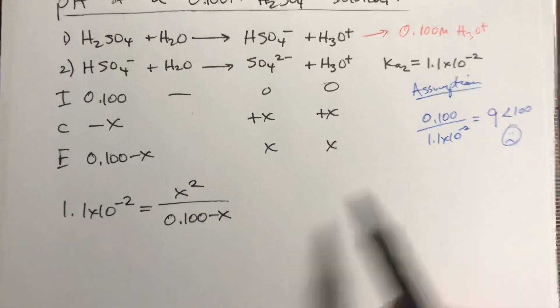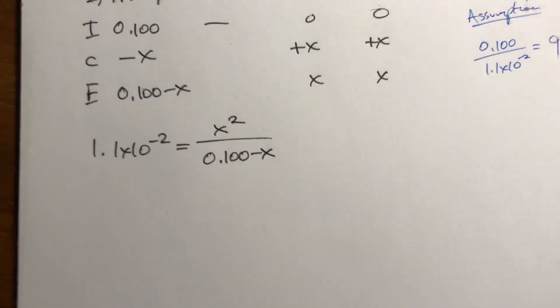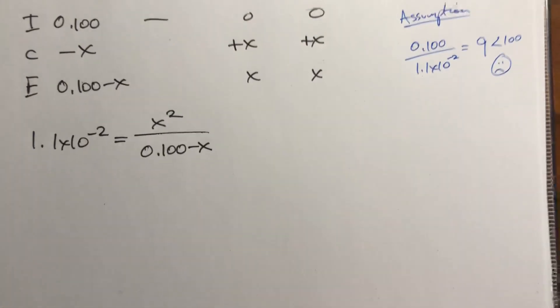Our assumption is not above 100, so we cannot get rid of that minus x at the bottom. So we're going to have to do all the leg work to set up the quadratic equation.